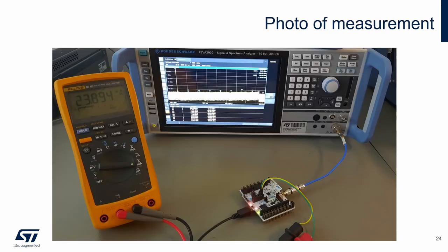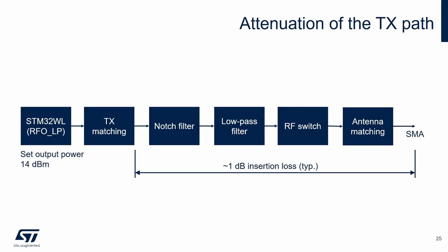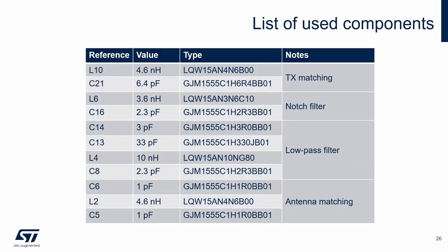Here is a picture of the measured board as used in this example. Typical insertion loss of the transmitter path with the RF switch is about 1 dB. In our case, we set 14 dBm in the firmware and measured the following values on the individual blocks. The final output power measured on the SMA connector is 13.09 dBm, giving an insertion loss of about 0.8 dB. Here is the table of components used in this example.